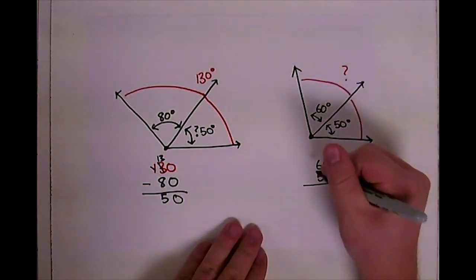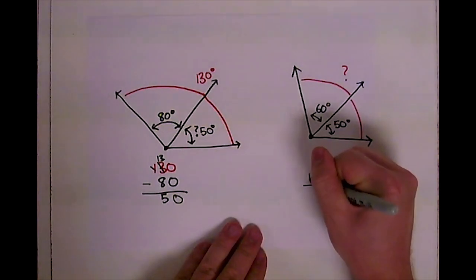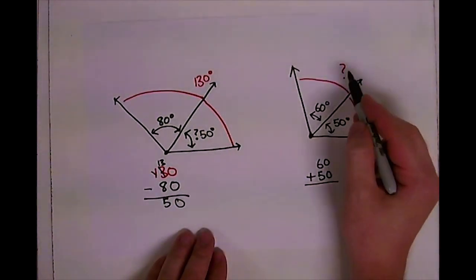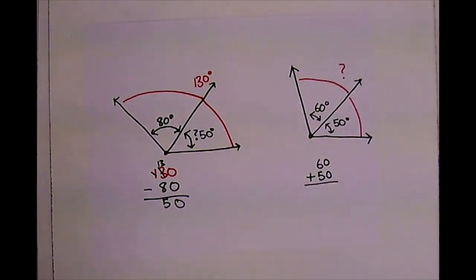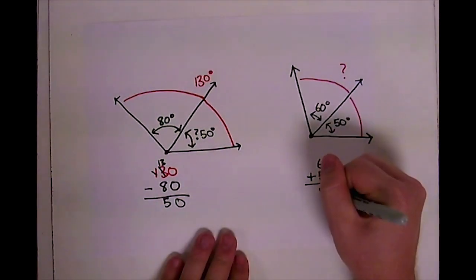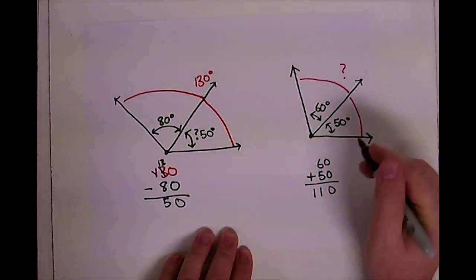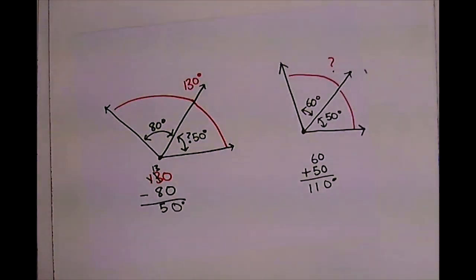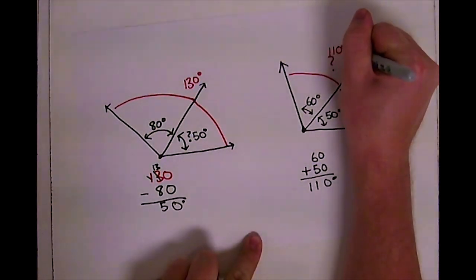Total should be your key word to know that you are trying to figure out a problem that involves addition because we're going to add this angle. We're going to add this angle and we get the total of both of those angles. So 60 plus 50 is 110. So we have 110 degrees.